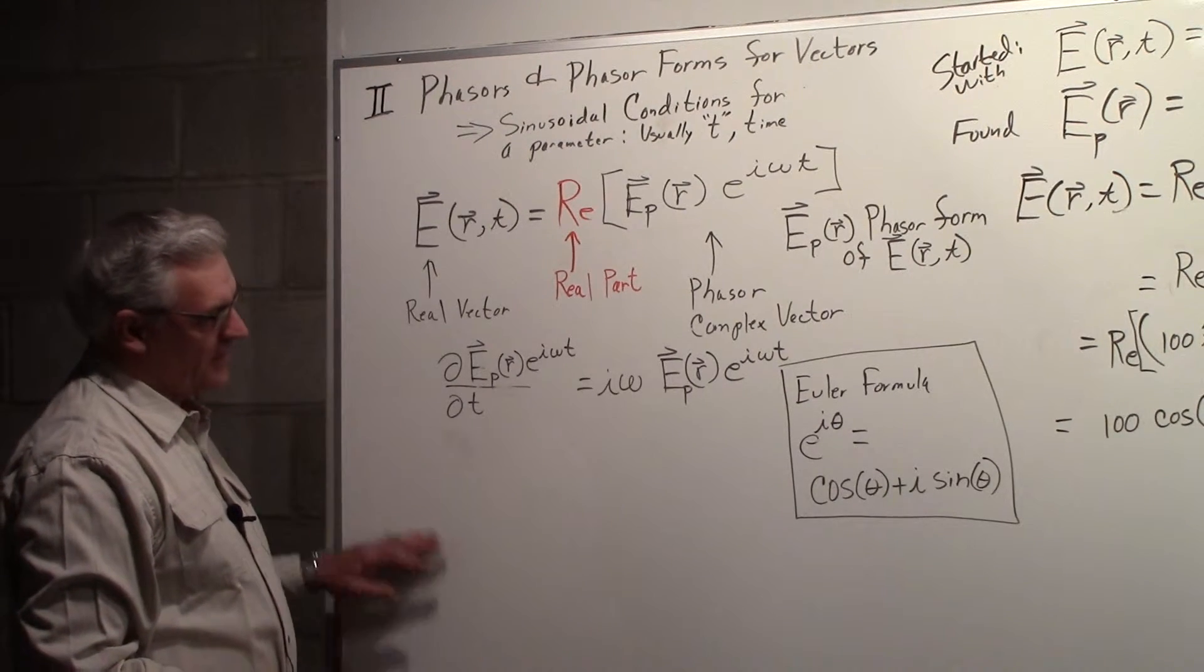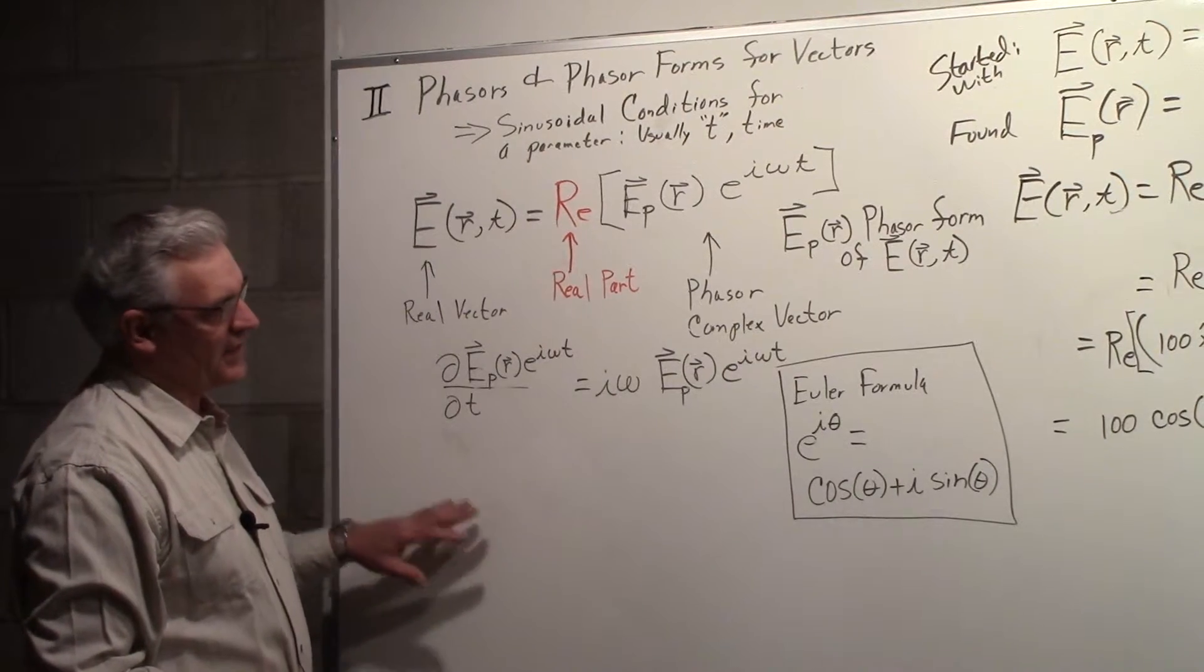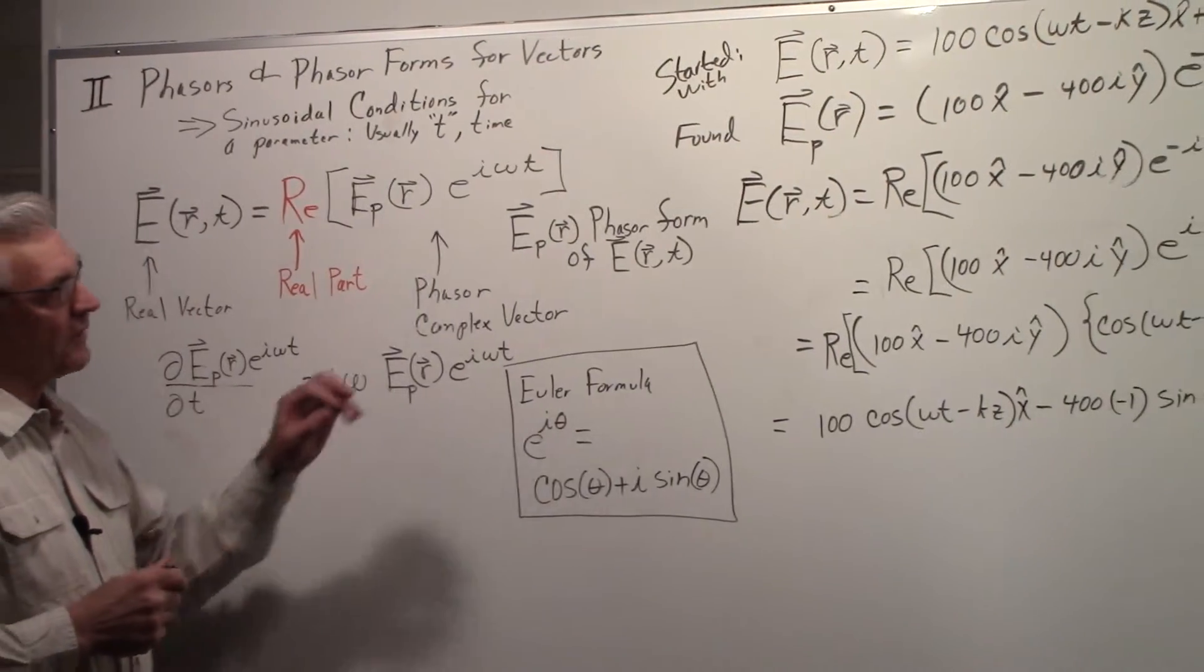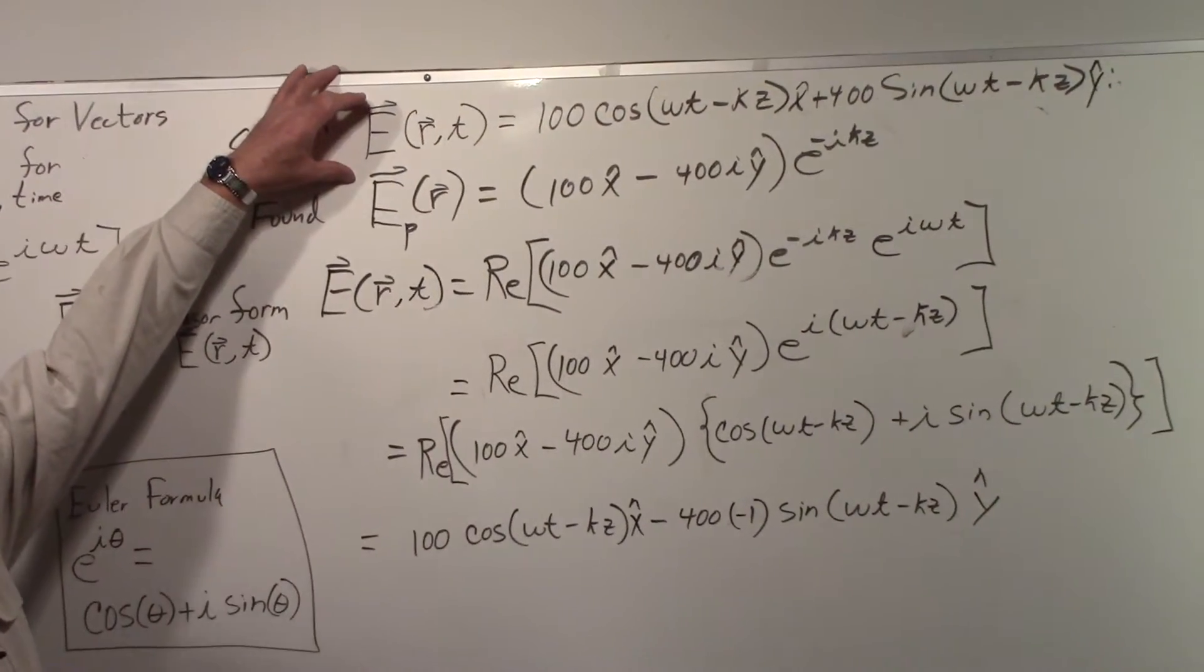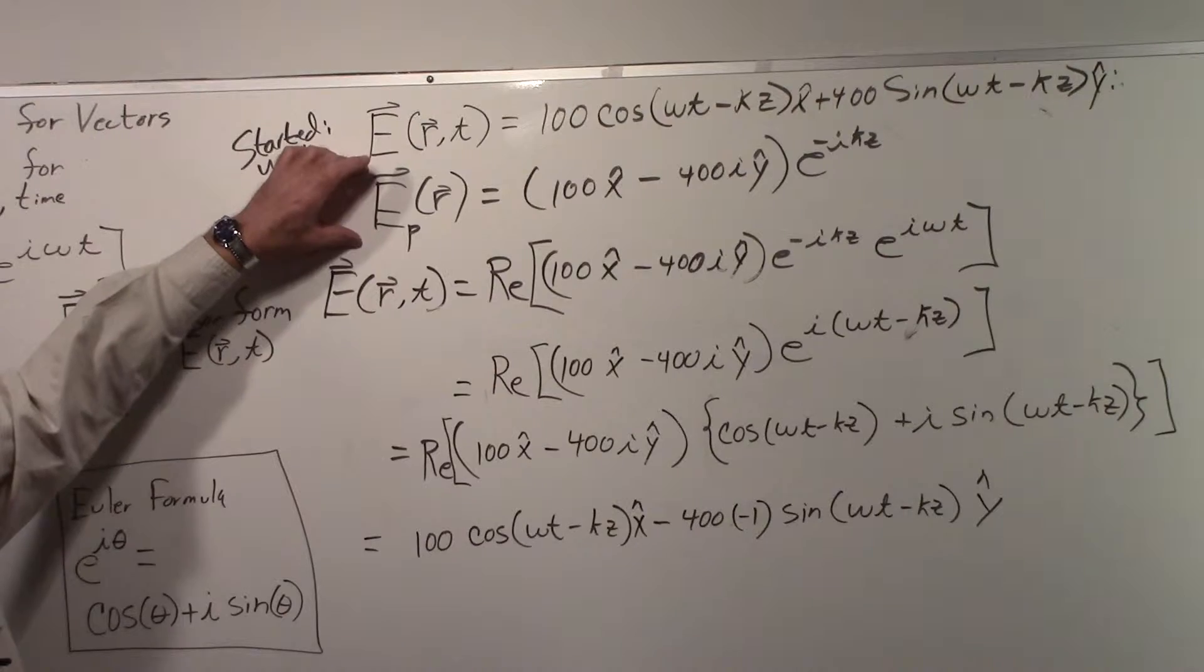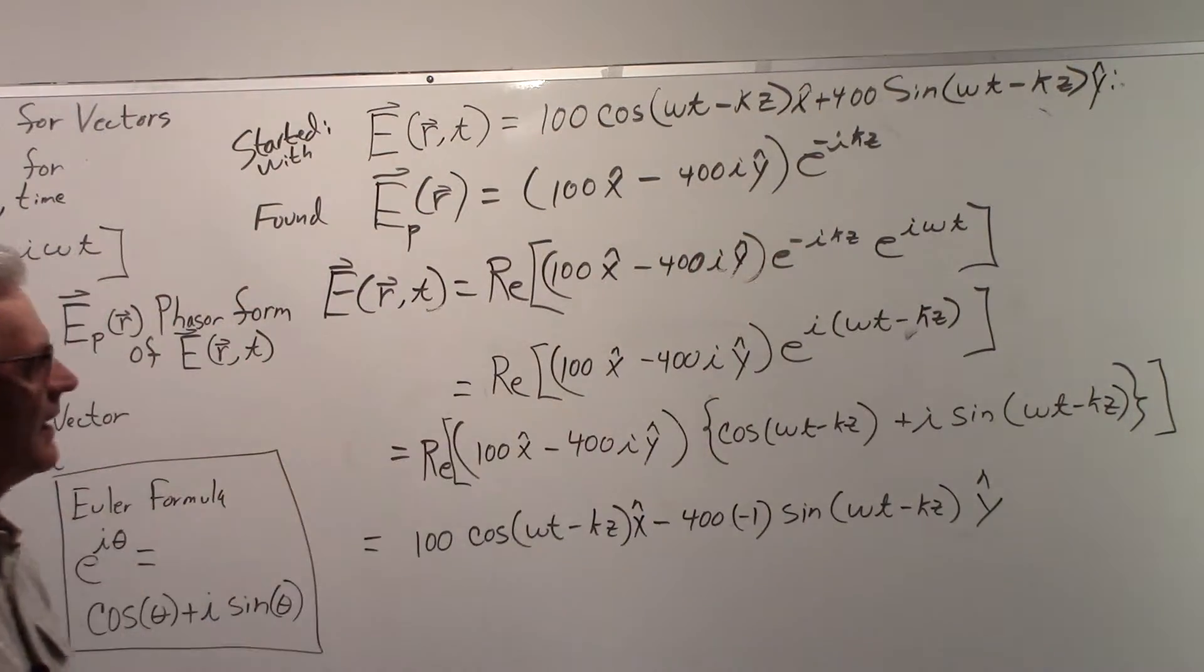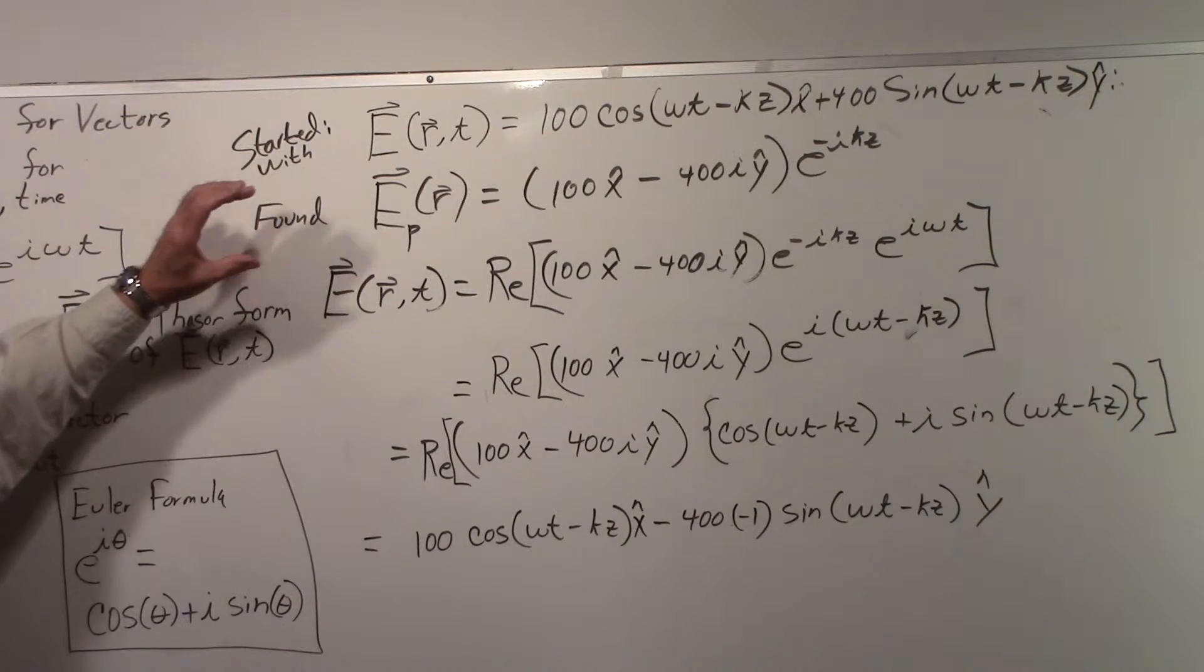We talked about some examples of how the form of Maxwell's equations change in Part 1. In Part 1 we started out with the real vector—normal vector everybody uses—and we worked through and we found the phasor form for that real vector to be this complex vector. What we want to do now is start with this and find this.